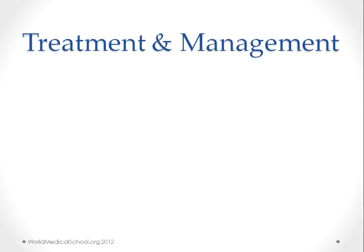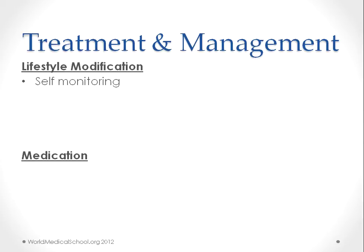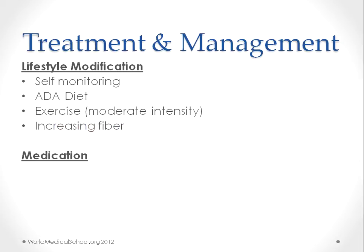The treatment involves lifestyle modification or a combination of lifestyle modification and medications. The patient should check her blood glucose level regularly and follow the American Diabetic Association diet, which involves limiting carbohydrates and including more fruits, vegetables, and whole grains. Moderate-intensity exercise is also recommended, and increasing fiber in the diet has been shown to help control blood glucose. Routine fetal ultrasound and non-stress tests should be done to assess fetal growth and development.